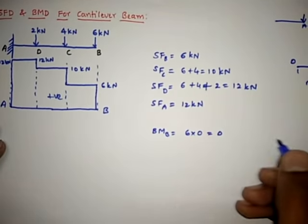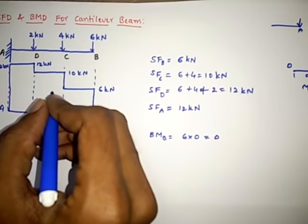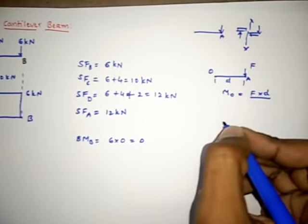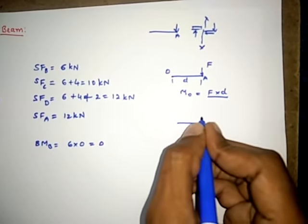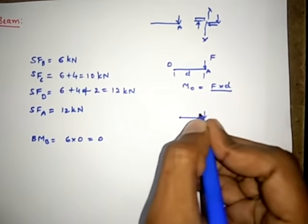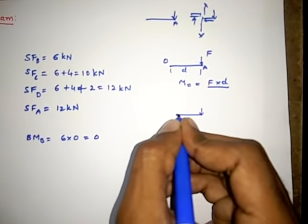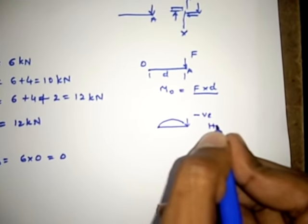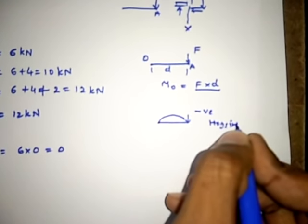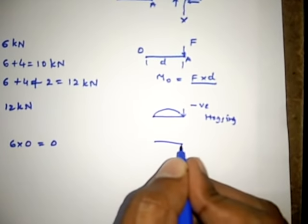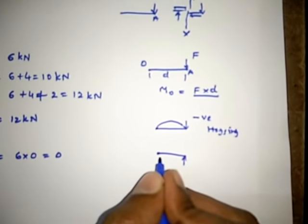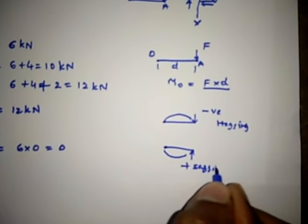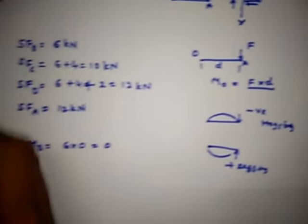For the bending moment sign convention: when a force bends the beam upward (hogging), it is negative. When a force bends the beam downward (sagging), it is positive. Since the bending moment at B is 0, this point is straightforward.